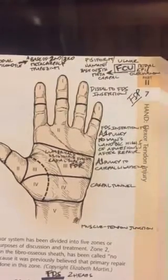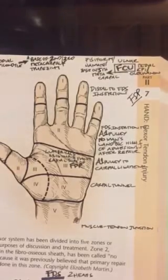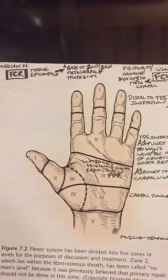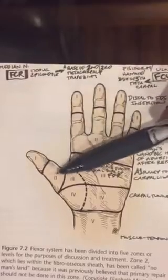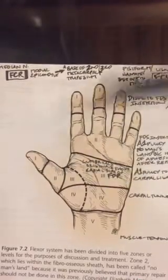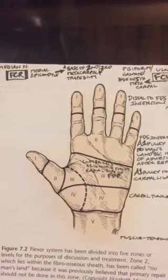For the thumb it's a little bit different. There's zone one, zone two, and zone three, and zone four. We'll talk about those in another video.